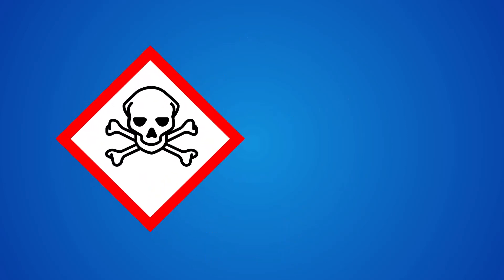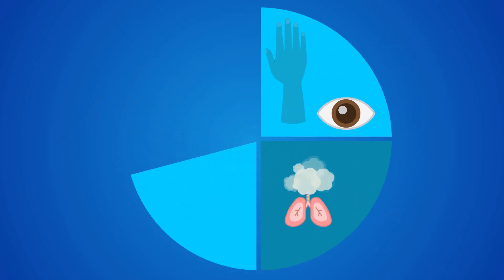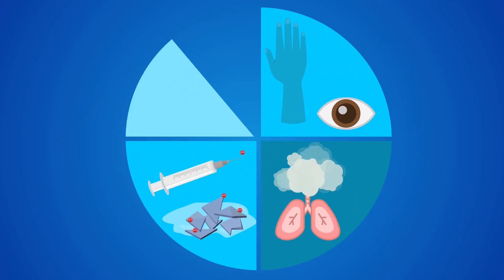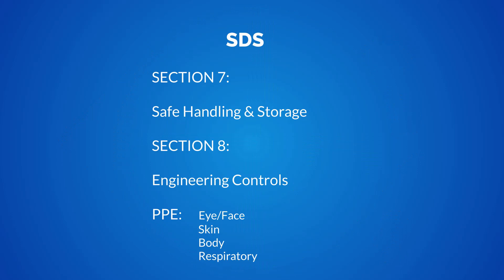The familiar skull and crossbones signifies serious illness or death if swallowed, inhaled, injected, or absorbed by soft tissue. The critical vulnerabilities are soft tissues, inhalation, injection, and ingestion. Other considerations are listed in sections 7 and 8 of the SDS.